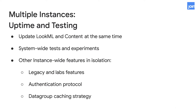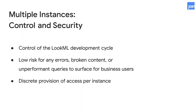Having non-production instances is also ideal when experimenting with instance-wide features in isolation, like turning off beta and labs features, trying out new authentication protocols and a new data group caching strategy. Another reason to have additional Looker instances is to have more control over the LookML development cycle — specifically which code is promoted to production with specific release branches. Because no LookML development will occur on the production instance, there will be very low risk for errors, broken content, or underperforming queries surfacing for business users.